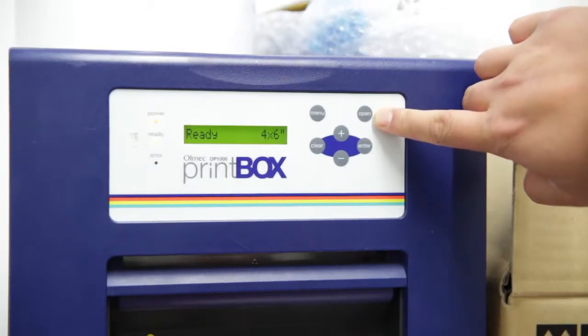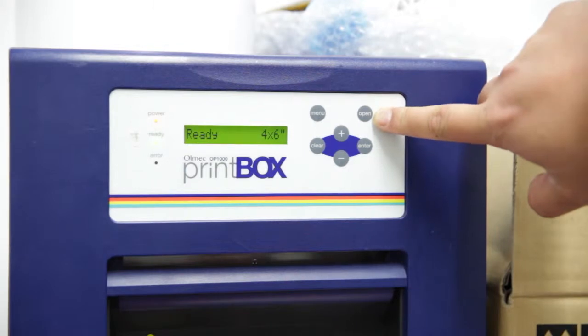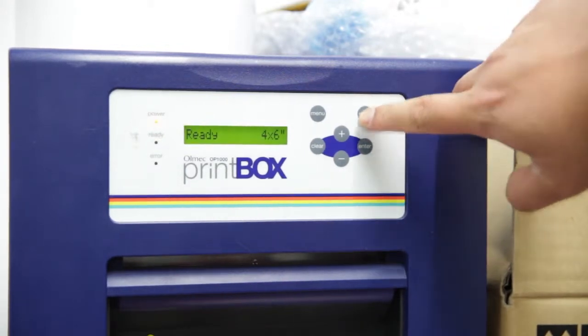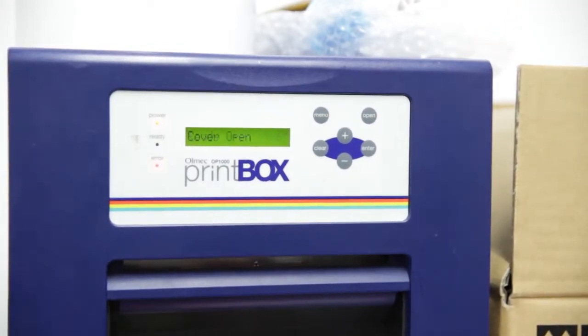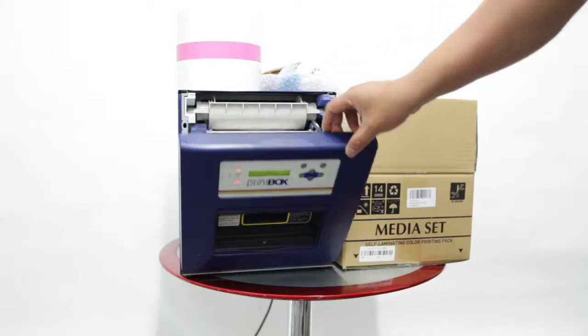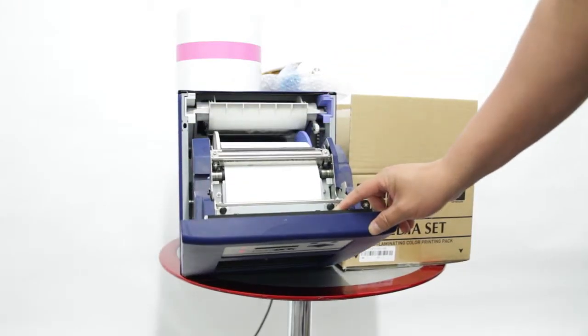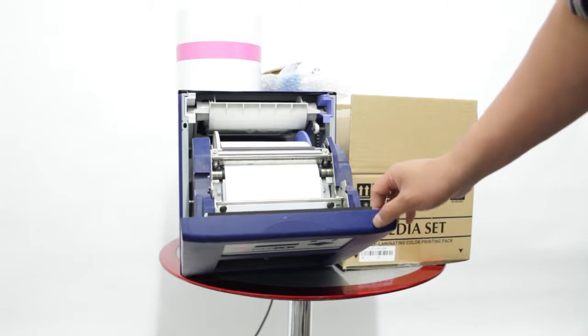The next step is to open the front cover by pressing the open button at the top right of the printer. Once the printer cover is open, fully extend the front panel towards the floor.